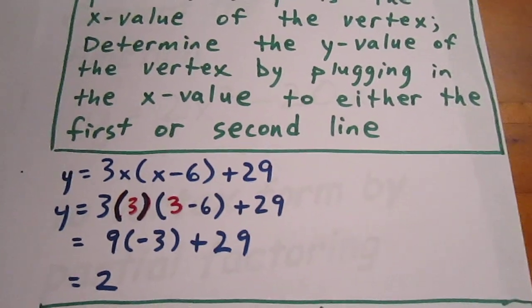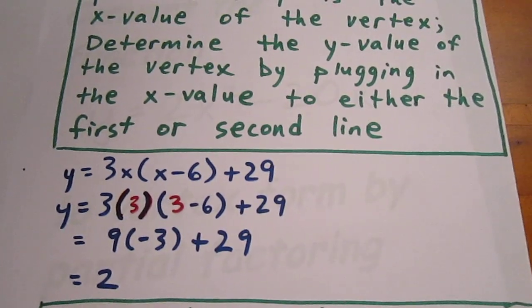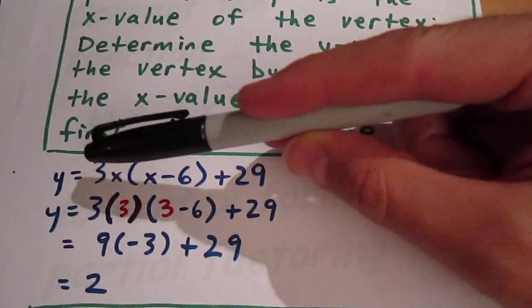So we know that the x value of the vertex is 3, the y value is 2, and the leading coefficient is 3.